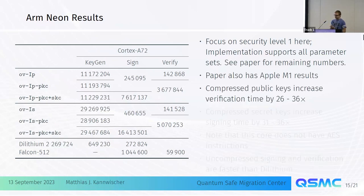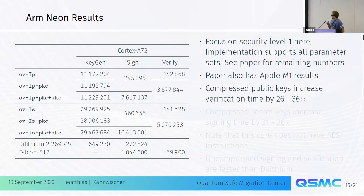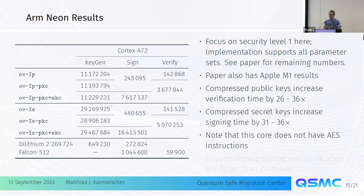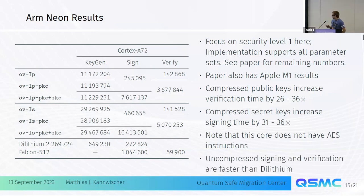Looking at results — I have A72 results here, and we also have Apple M1 results. We see that compressed public keys increase verification time by 26 to 36 times. Here it's much slower to use compressed public keys because this core doesn't have AES instructions, so it has to be done in software, which costs a lot. For the uncompressed variants, performance is again better than Dilithium.